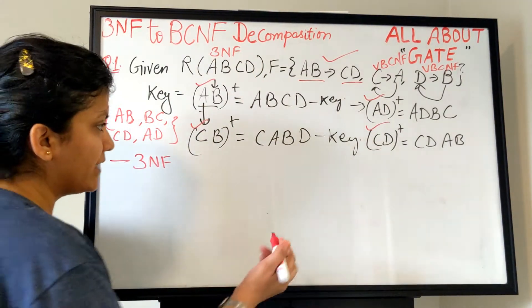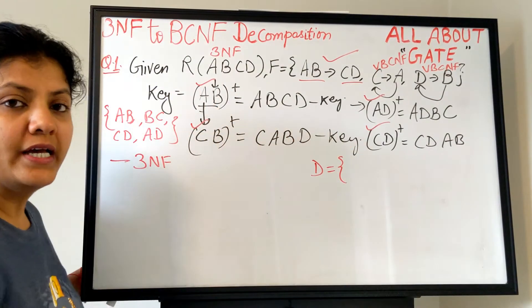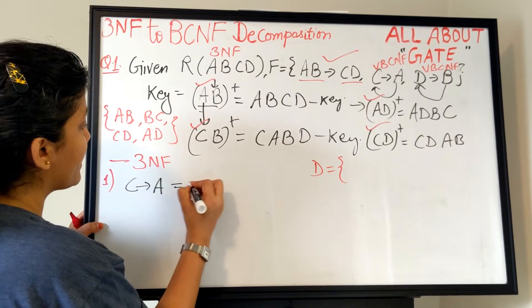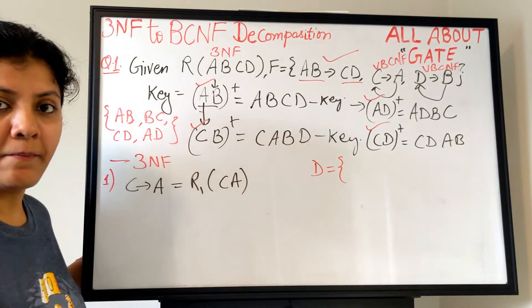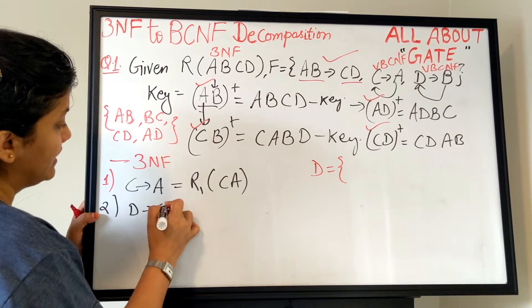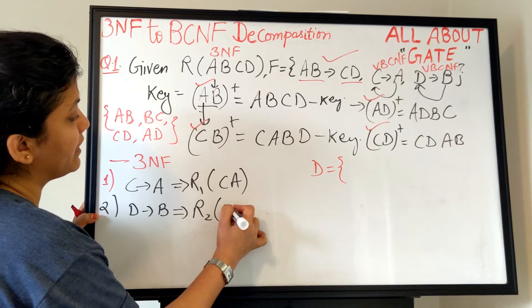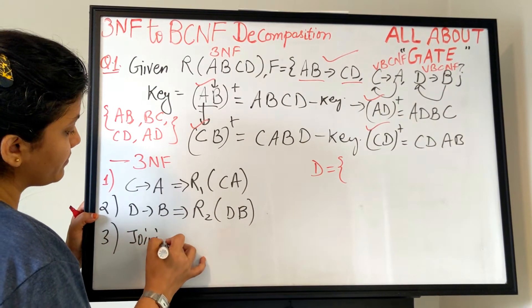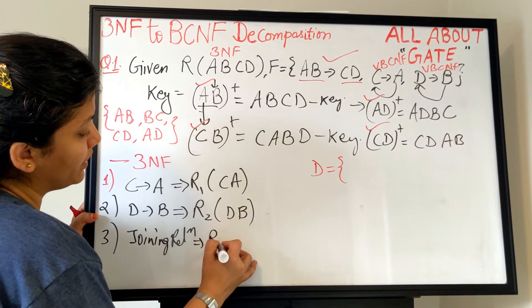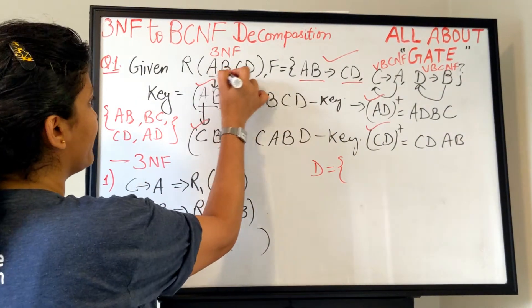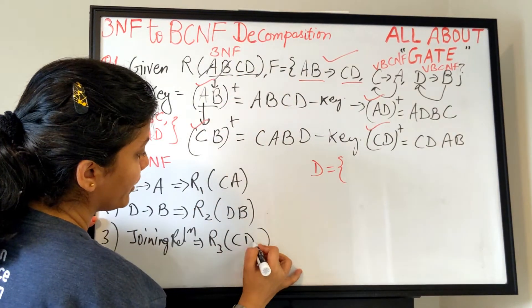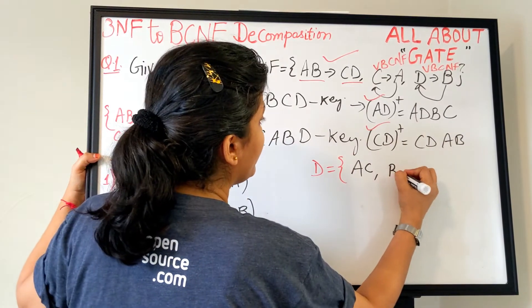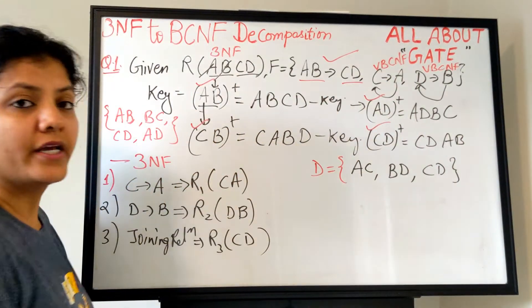We need to decompose this into BCNF. Let's write the decomposition set D. Take the first BCNF violation C→A and make relation R1(CA). Take the next violation D→B and make relation R2(DB). For the joining relation R3, remove the dependent attributes A and B from the original relation — the remaining attributes give R3(CD). So the decomposition is: R1(AC), R2(BD), R3(CD).